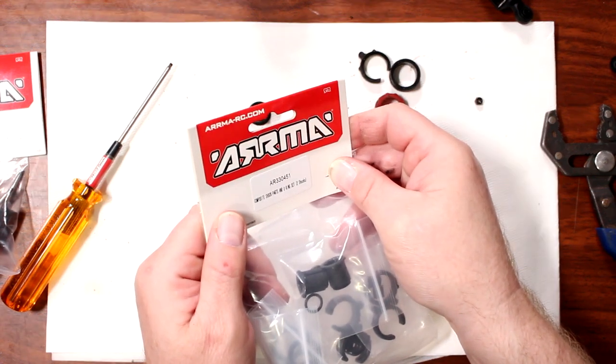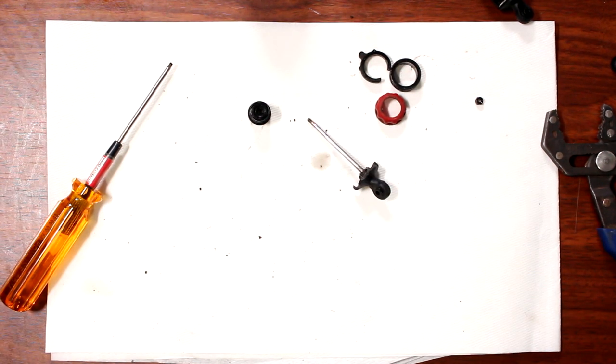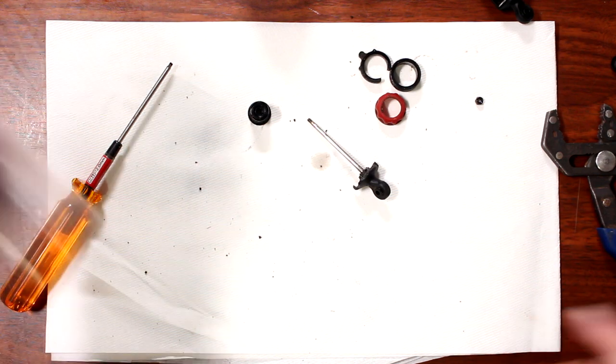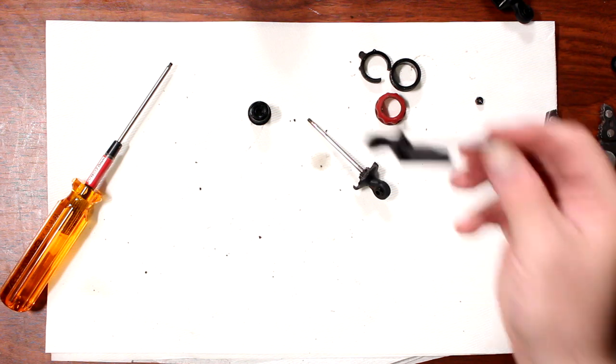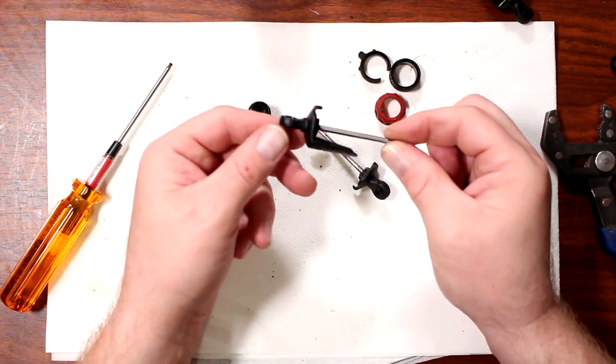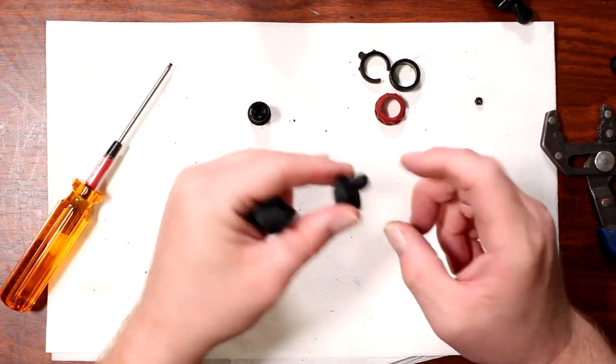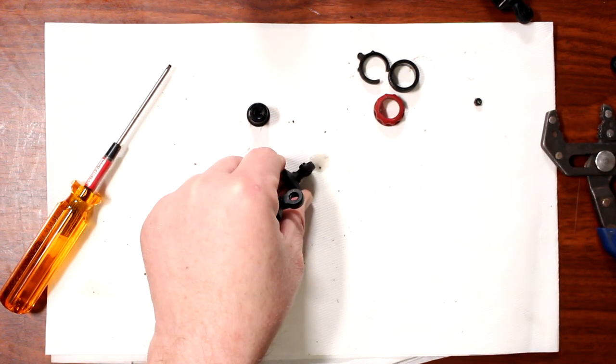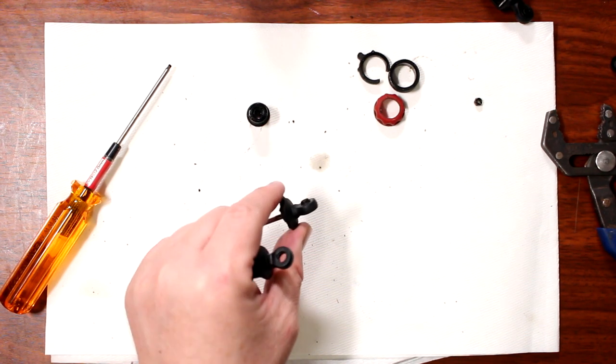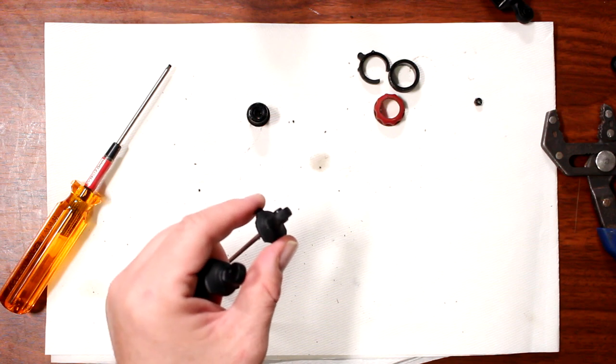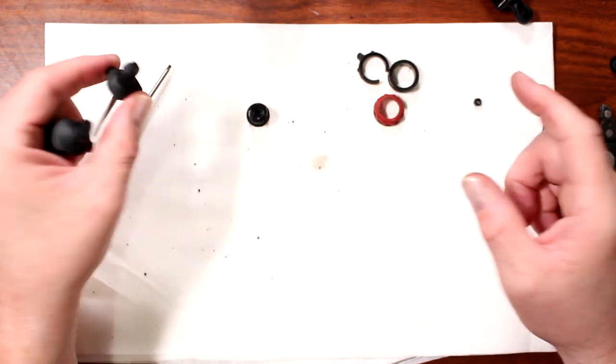Now for the shock rebuild kit, I do have one pre-open. Here's our bottom body. I could reuse the middle part, the pivot balls. But I'm just going to go brand new.